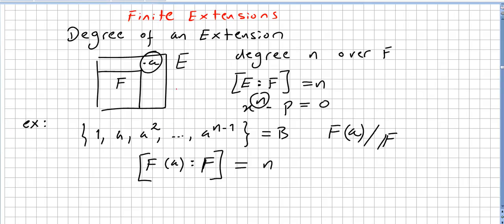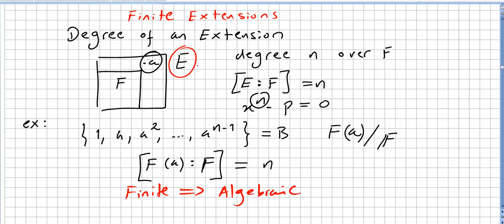A theorem I will state without proof: if E is a finite extension of F, then E is an algebraic extension of F — meaning every single element of E will be algebraic over F. So finite extension implies algebraic extension. But the converse is not true.